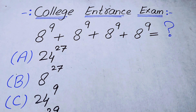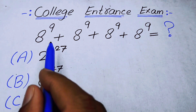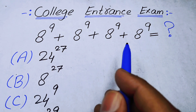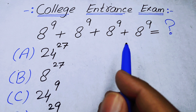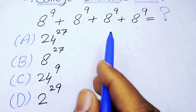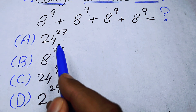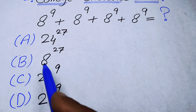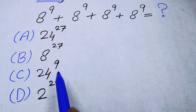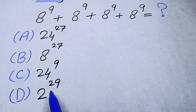Hello everyone, welcome back to the Map of Mathematics. In this video we are going to solve a college entrance exam question. We have an exponential problem: 8 to the power of 9, plus 8 to the power of 9, plus 8 to the power of 9, plus 8 to the power of 9. The options are: A) 24 to the power of 27, B) 8 to the power of 27, C) 24 to the power of 9, and D) 2 to the power of 29.